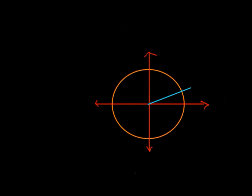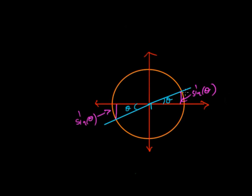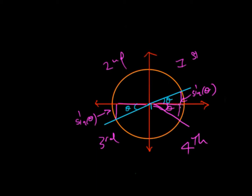If we extend this line down into the third quadrant, we've got two angles: theta here and theta over here, and these are equal. Once again, the magnitudes of sine theta are the same and the magnitudes of cos are the same — this length and this length are equal. We can say the same for the first, second, and third quadrants, and if we draw a line into the fourth quadrant and let it equal theta, the sine magnitude will be the same and the cos magnitude will be the same.